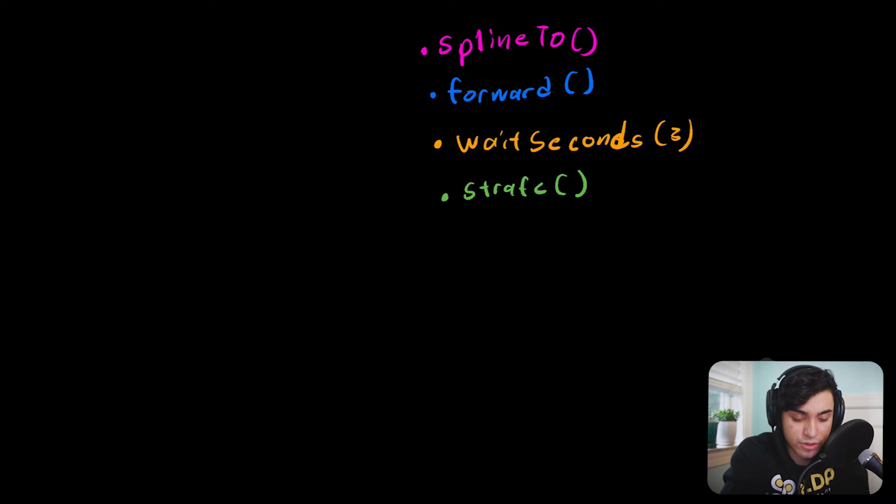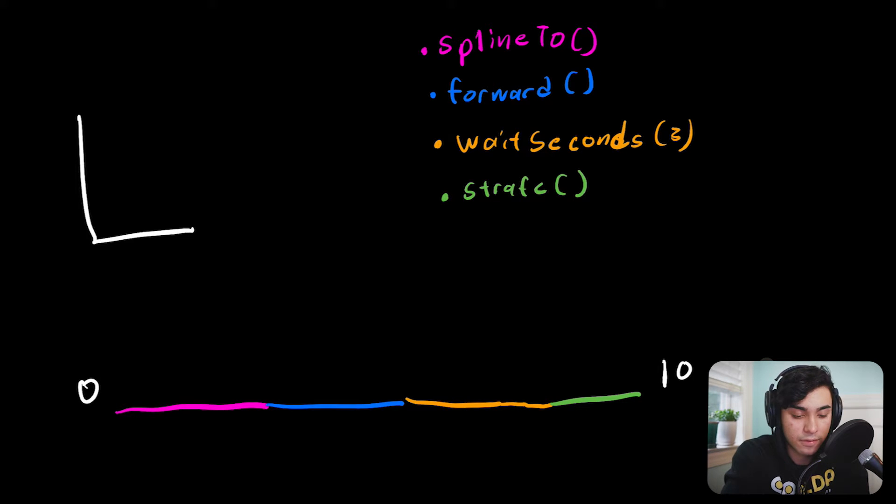So let's draw the trajectory out as a little timeline. So we have our spline to. We have our forward. We have our wait for three seconds. And then we have our strafe. Actually, let's make wait seconds a little longer just for demonstration purposes. Then we have our strafe. So we have this is zero seconds and this is 10 seconds. So our whole trajectory sequence takes 10 seconds. Now, let us graph the duration of the entire trajectory sequence. We have seconds. Then we have duration.